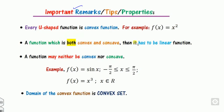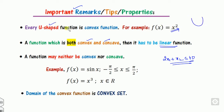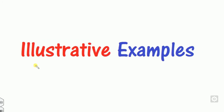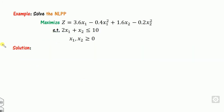A function that is both convex and concave is called a linear function, for example 2x. Since x-squared has a U-shape graph, every U-shape function is a convex function. Remember: for a minimization problem you must prove the function is convex; for a maximization problem you must prove the function is concave, using the Hessian matrix.